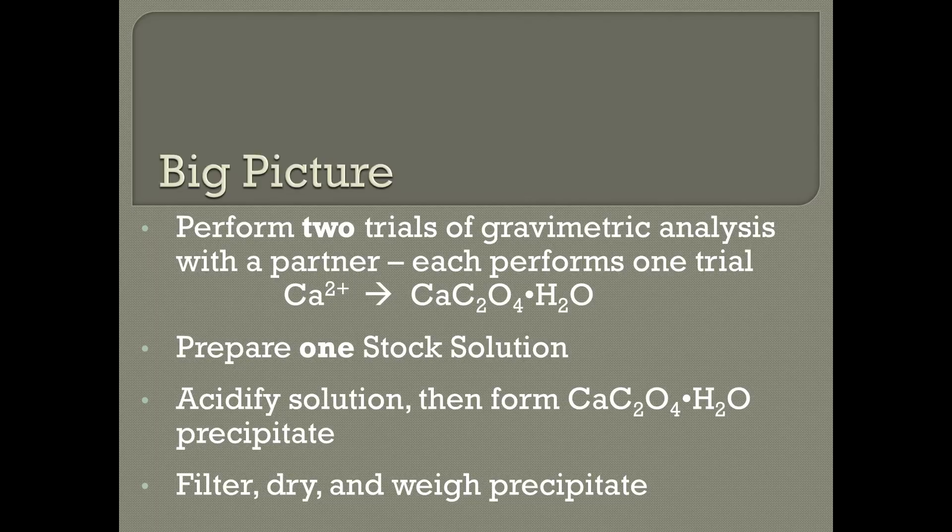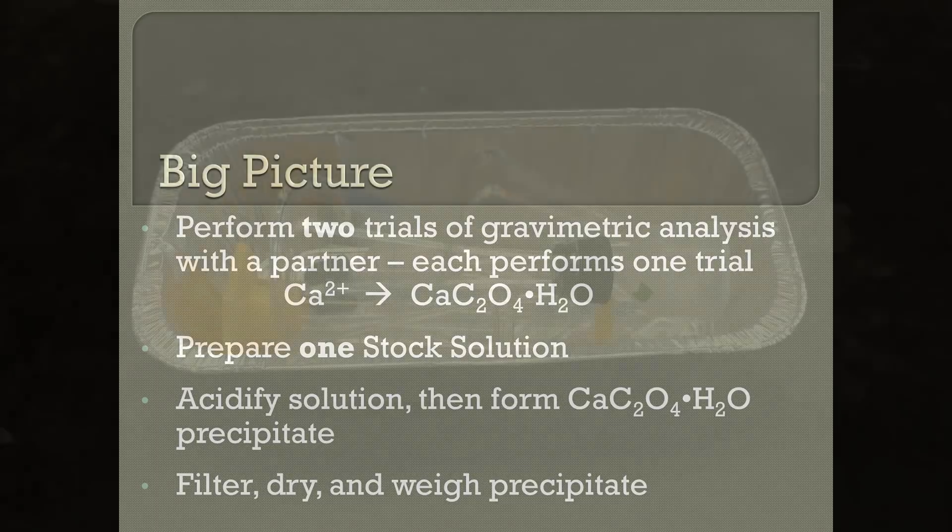You'll acidify your stock solution, then form the calcium oxalate hydrate precipitate. Your precipitate will then be isolated via filtration, dried and weighed, and from the mass of your precipitate you'll be able to determine how much calcium was in your original unknown.